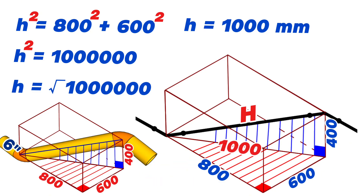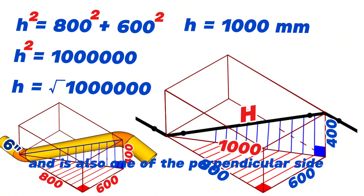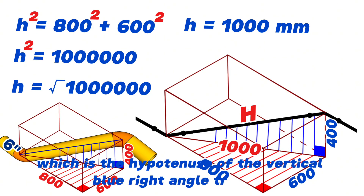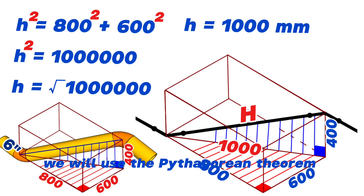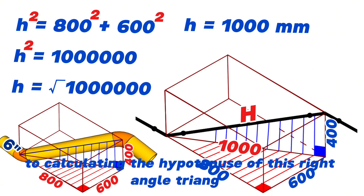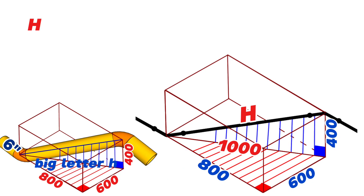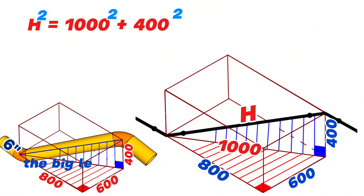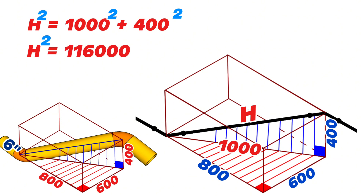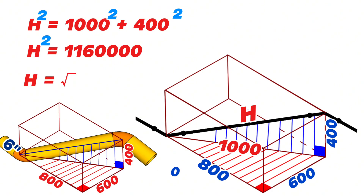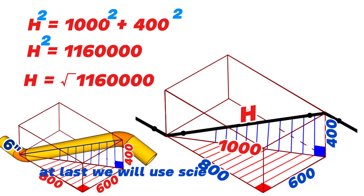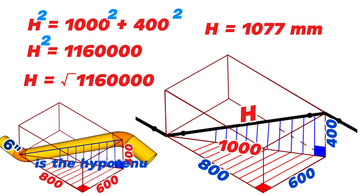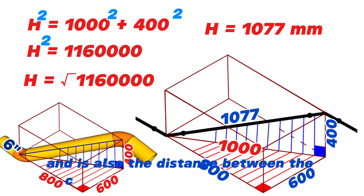1000mm is the hypotenuse of the horizontal red right-angle triangle, and is also one of the perpendicular sides of the vertical blue right-angle triangle. Now let's find big H, the hypotenuse of the vertical blue right-angle triangle. Using the Pythagorean theorem again: big H squared equals 1000 squared plus 400 squared, which gives big H squared equals 1,160,000. Therefore big H equals the square root of 1,160,000, which equals 1077mm — the distance between the centers of the butt-weld elbows.